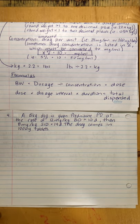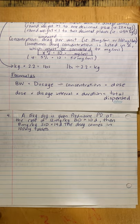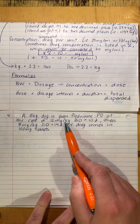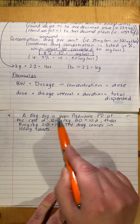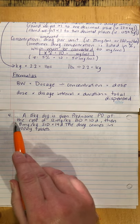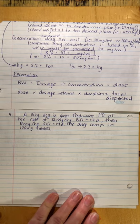Typically you'll see an order like this: a 15 kilogram dog is given prednisone PO at 12 milligrams per kilo, BID for 10 days — then 8 milligrams per kilo, SID for 14 days. The drug comes in 100 milligram tablets. We'll have to calculate the dose and total dispensed for each phase, then add them together to get the total dispensed.